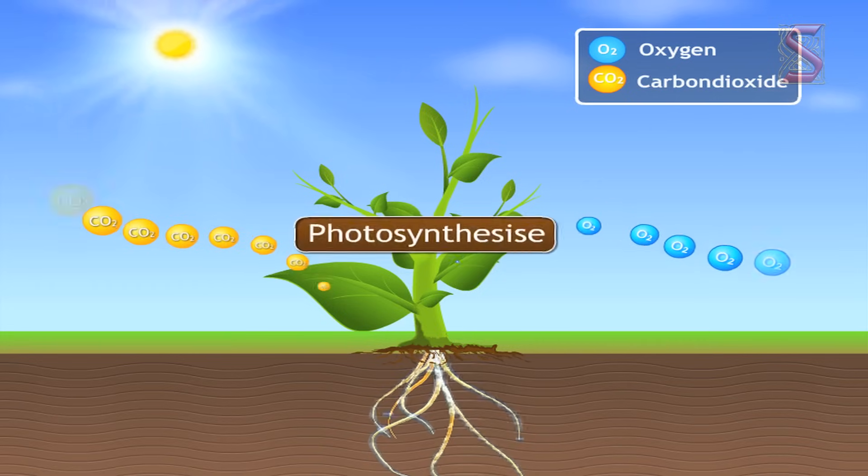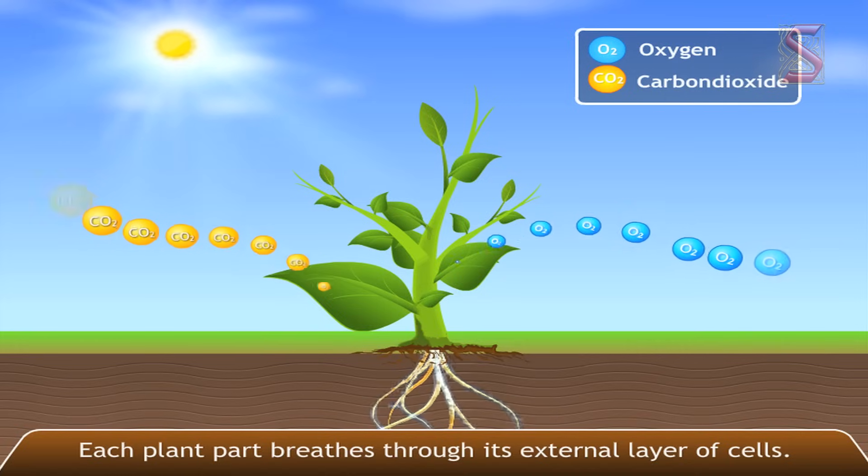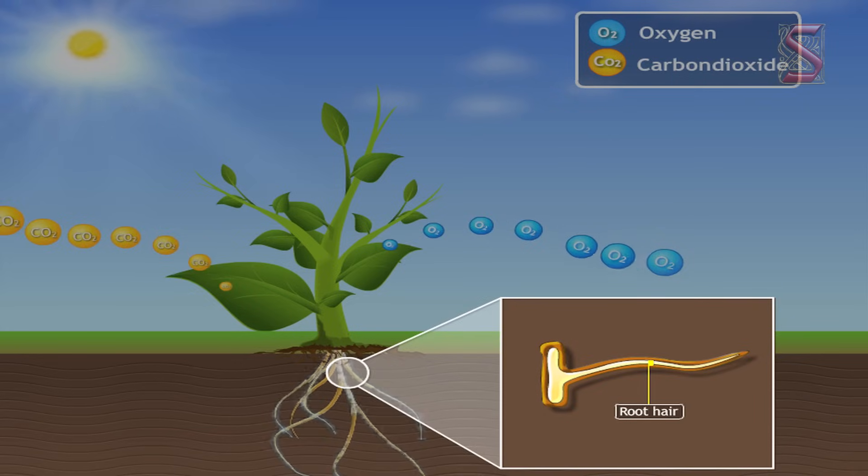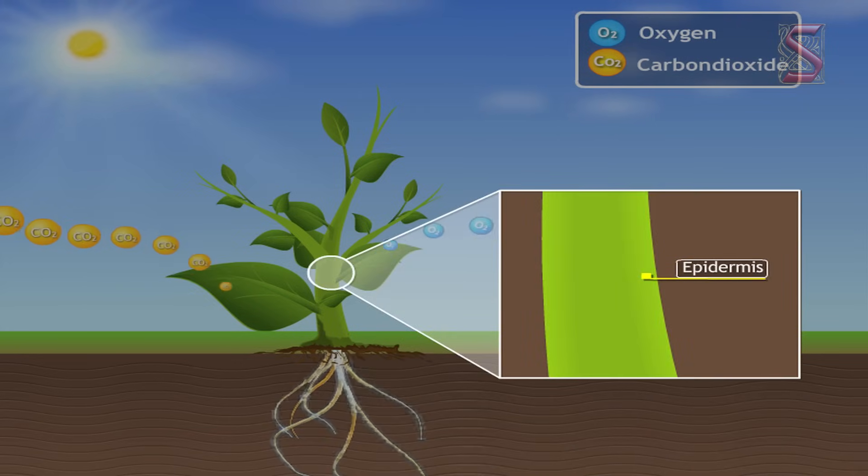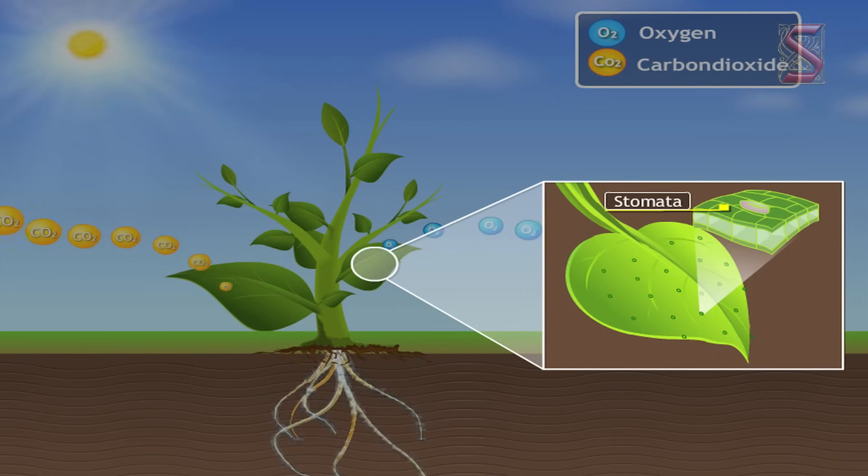can only photosynthesize when they are in the light. Each plant part breathes through its external layer of cells. Roots breathe through root hairs, stems breathe through epidermis, leaves have numerous small pores called stomata for breathing. Let us learn about them in detail one by one.